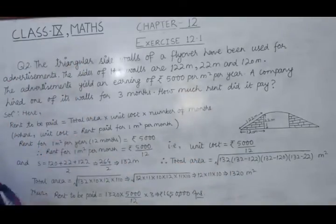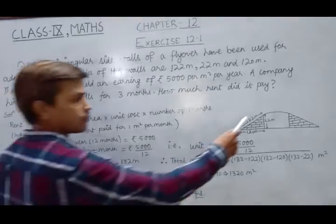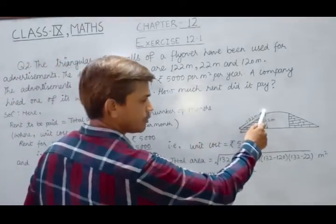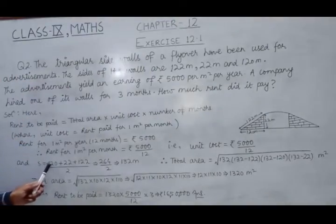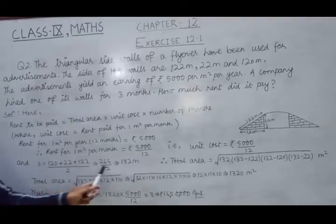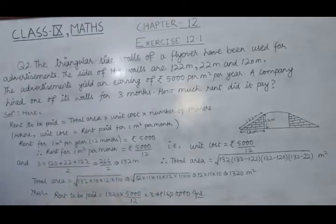Now, in order to calculate total area, we calculate the semi-perimeter of this triangular region. So, this S equals to sum of all 3 sides divided by 2 and on simplification it becomes 132 meter.